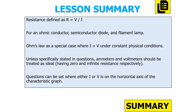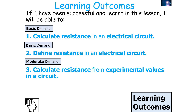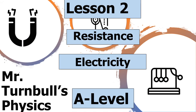To summarize: resistance is defined as potential difference over current. Ohm's law is a special case where current is directly proportional to potential difference under constant physical conditions. We've also covered ohmic conductors, semiconductor diodes, and filament lamps. An ideal ammeter has zero resistance and an ideal voltmeter has infinite resistance. Thank you very much for watching this lesson on resistance, part of the electricity topic in AQA A-level physics — have a lovely day.